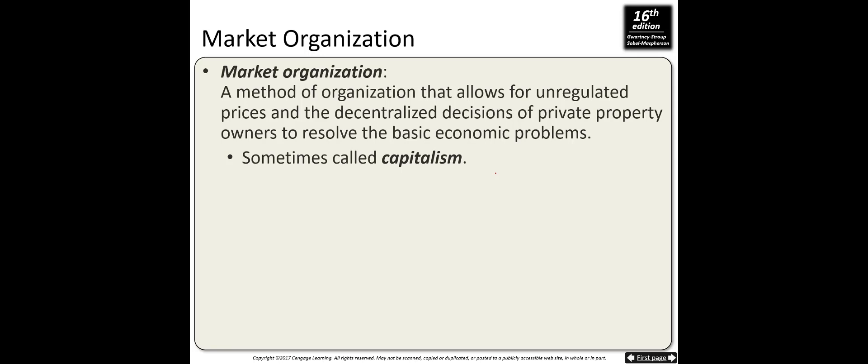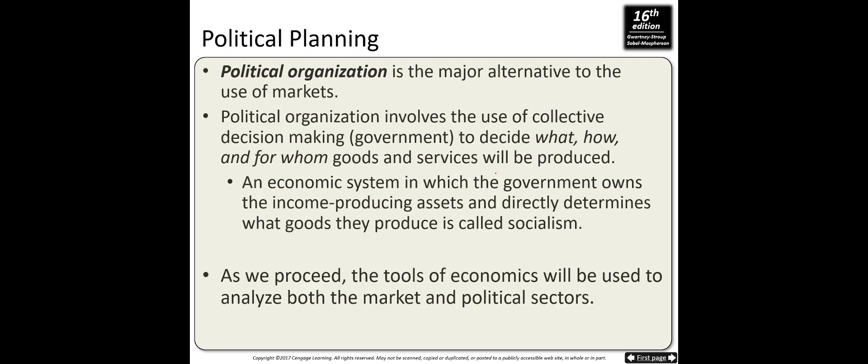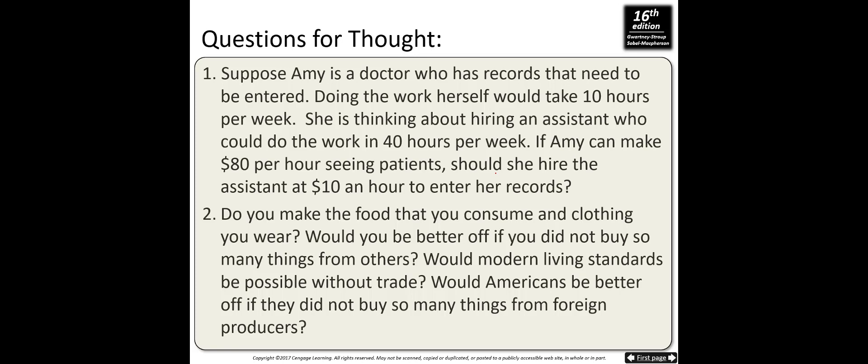For whom to produce: those who value the product most — meaning those willing to pay the price. How to produce: cost minimization through competition leads to efficient production at minimum cost. This market organization is sometimes called capitalism. The second system is political organization, where collective decision-making and government determine what, how, and for whom goods and services are produced — an economic system in which the government owns income-producing assets is called socialism. That's the end of Chapter 2.